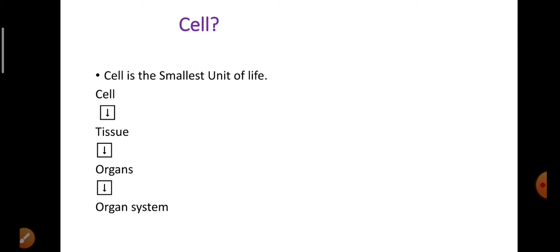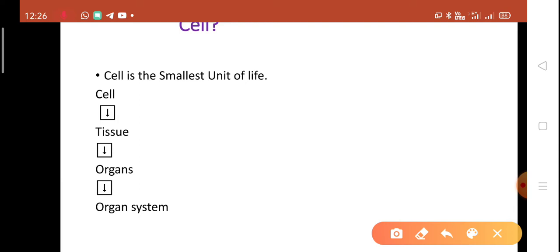Why is the cell called the fundamental unit of life? Because cell is the basic structural unit of our body. Many cells, but not the same cells, make tissues. These tissues come together and make organs. These organs come together and make organ systems. And organ systems make organisms.